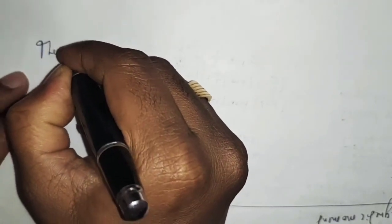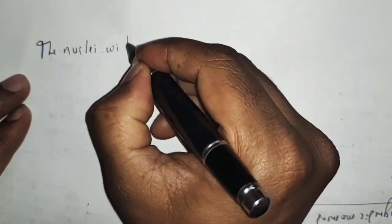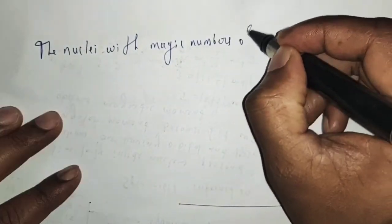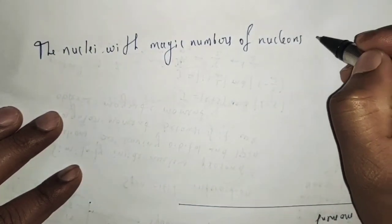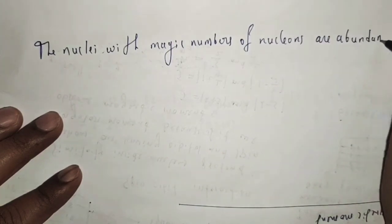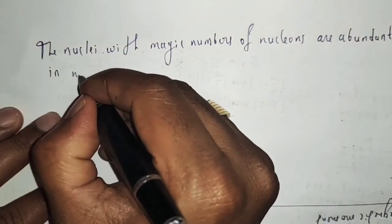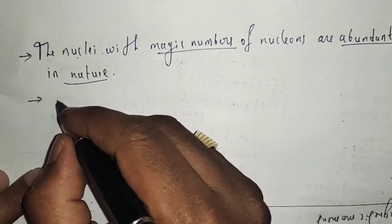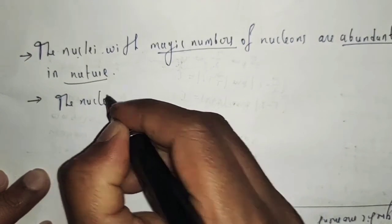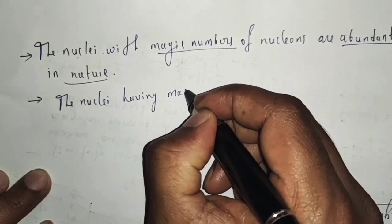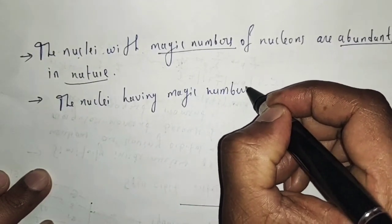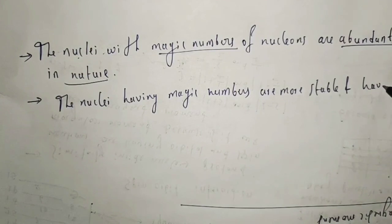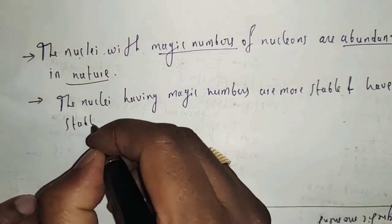Nuclei with magic numbers of nucleons are abundant in nature. Furthermore, nuclei having magic numbers are more stable and have more stable isotopes.